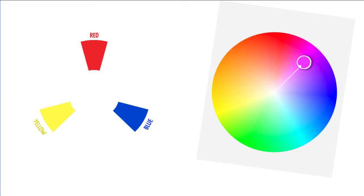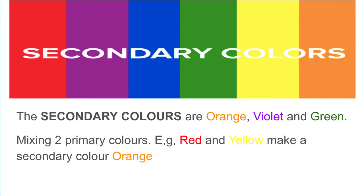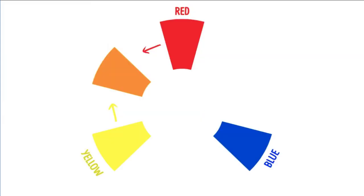By mixing primary colours you can actually create secondary colours. These secondary colours are things such as orange, violet and green. If we mix red and yellow together we make the secondary colour orange. If we mix yellow and blue we make green, and if we mix red and blue together we can make a violet colour.